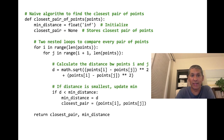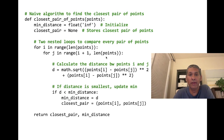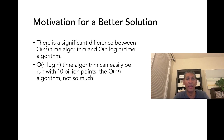We compute the distance using math dot square root. If it's less than the minimum distance, which is initialized to infinity, we update the minimum. Because there are two for loops, this will take O(n²) time. We don't want to do that — we want to find a better algorithm.